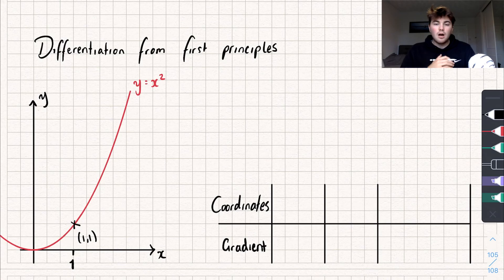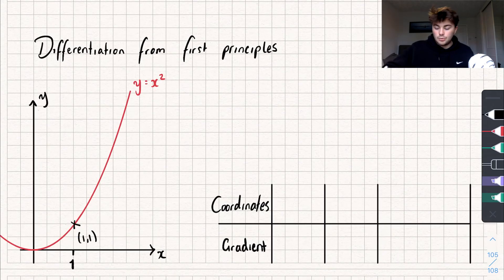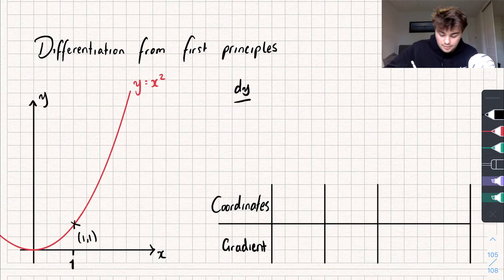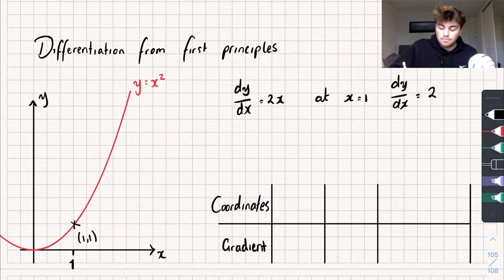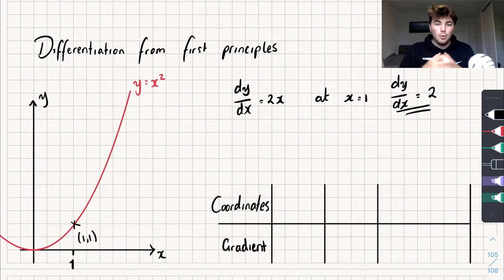I've drawn the curve y equals x squared, and say I wanted to find the gradient of this curve at the point x equals 1. Well, to do that I could differentiate and find that dy by dx is going to be equal to 2x, and then at the point x equals 1 my derivative dy by dx is going to be equal to 2 times 1, so 2. So we've found the gradient of the curve at that point.